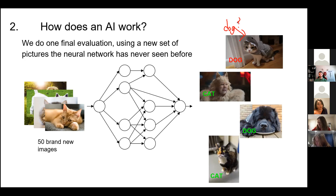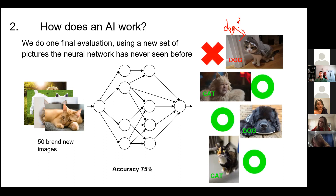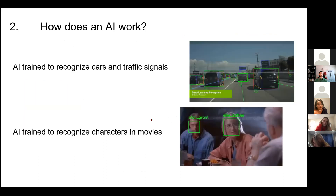If this example seems irrelevant, recognize that this technique is essential to all of how AIs work. Take for example an AI trained to detect cars and traffic signals — any of you want to buy a Tesla? The exact architecture is different, but the basic process of training is the same: start with a basic neural network, evaluate it, change it, and repeat. How about an AI trained to recognize the faces of famous characters in movies? Same process. If you understand the basics of these examples, congratulations — you understand AI.